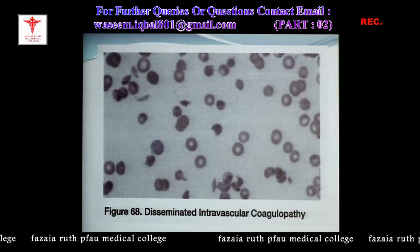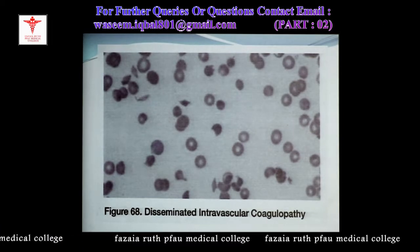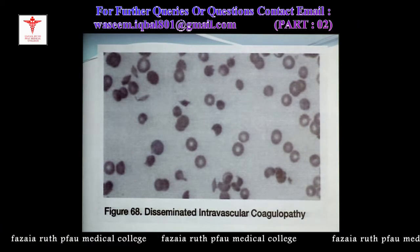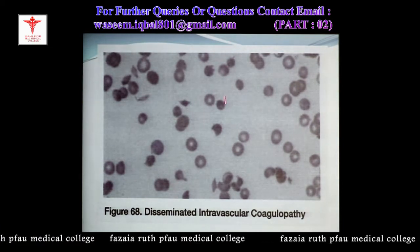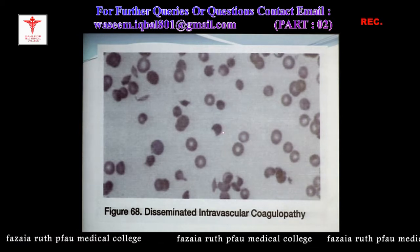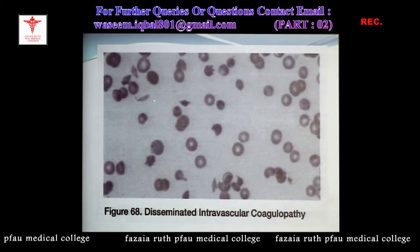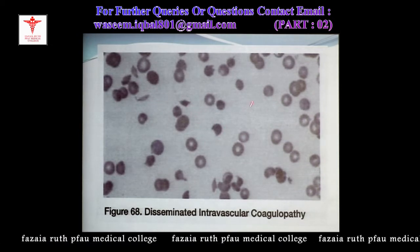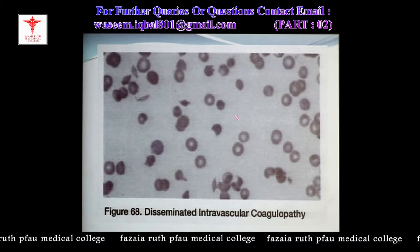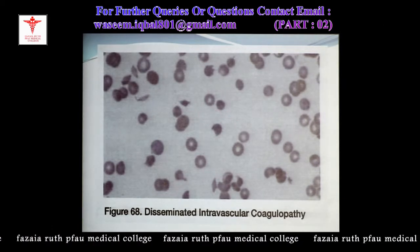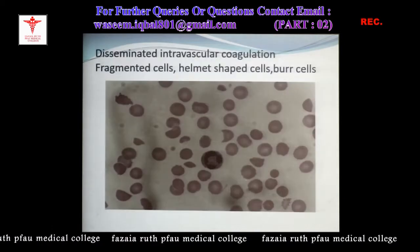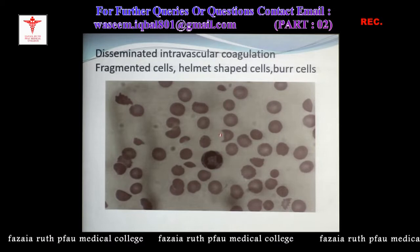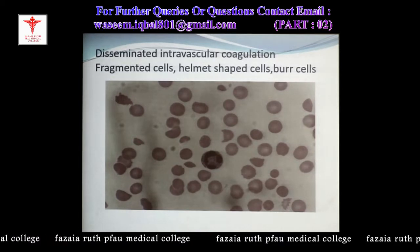This is microangiopathy in disseminated intravascular coagulation. You can see helmet-shaped cells, burr cells, misshapen cells, and triangular cells — all sorts of abnormal cell forms. Another picture shows a helmet-shaped cell as an example.